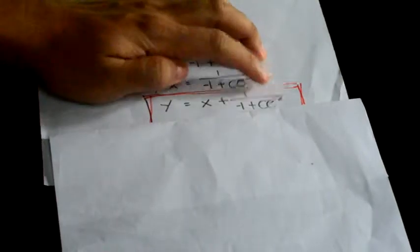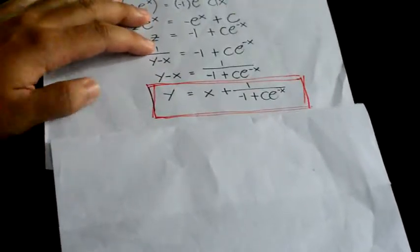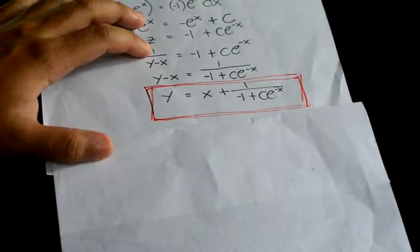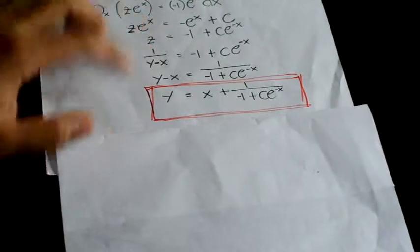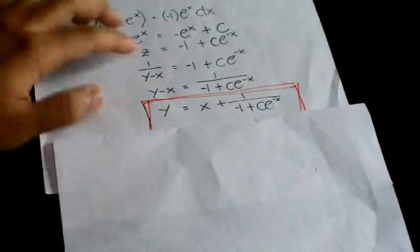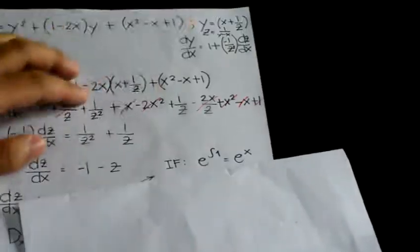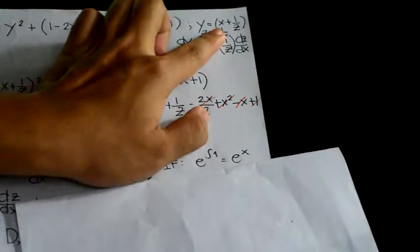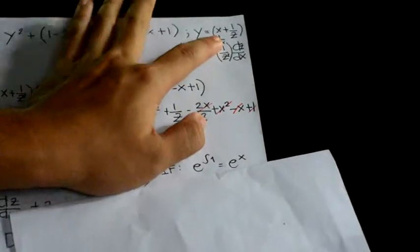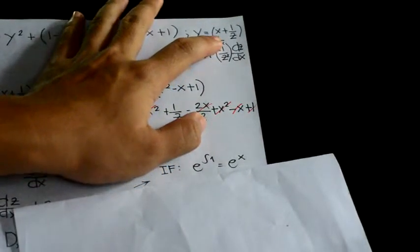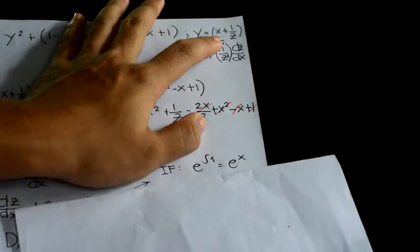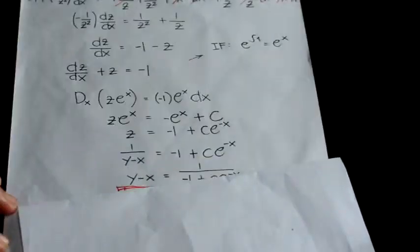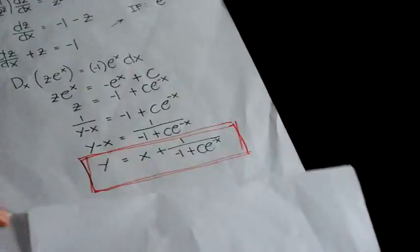And you will get y is equal to x plus 1 over negative 1 plus c times e to the negative x. That is the general solution of this equation. That's all, thank you for watching.